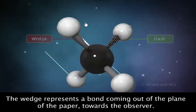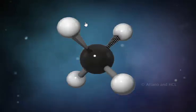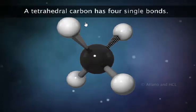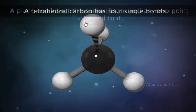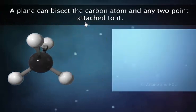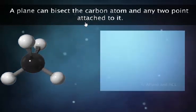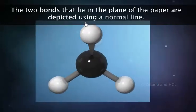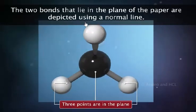Let us observe this in three dimensions. A tetrahedral carbon has four single bonds with four groups or atoms attached to it. A plane can bisect the carbon atom and any two points attached to it. There are three points in the plane. The two bonds that lie in the plane of the paper are depicted using a normal line.